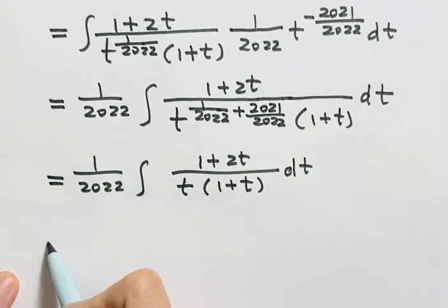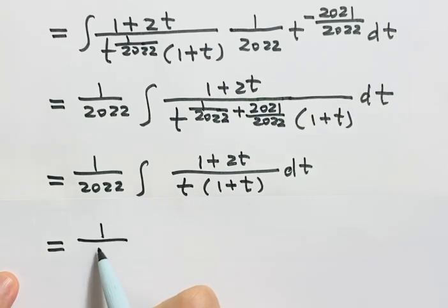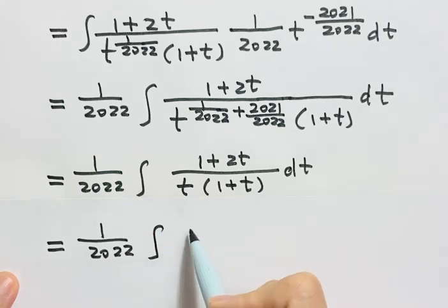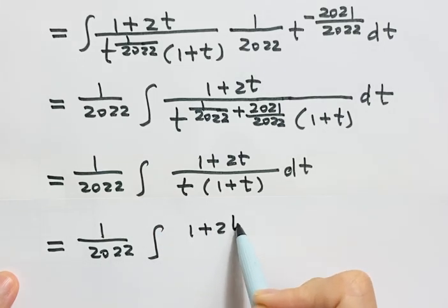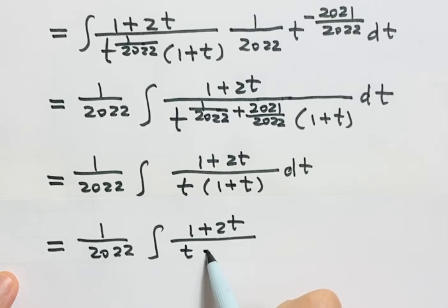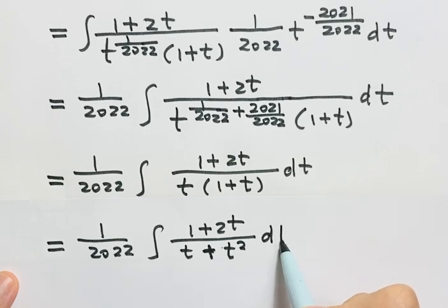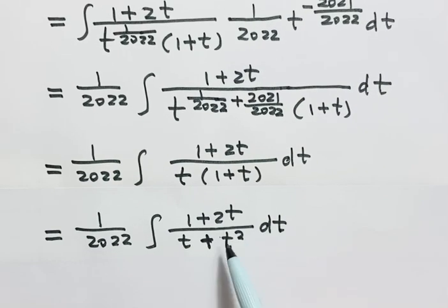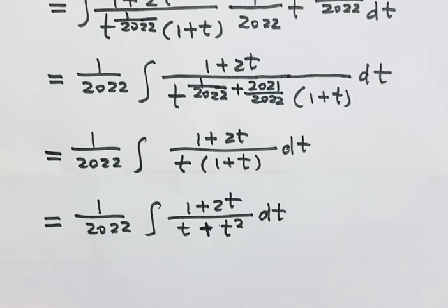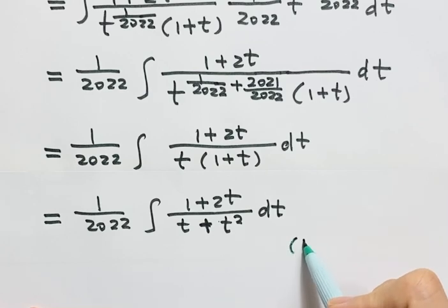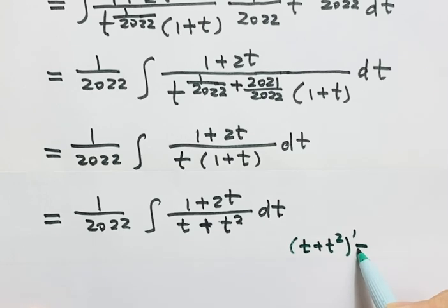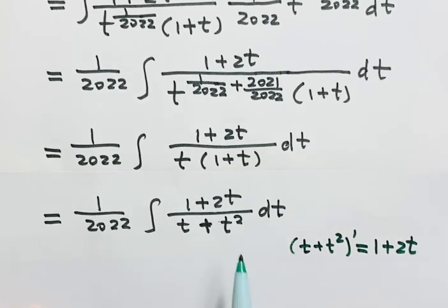Next we are going to expand the denominator. Expanding gives us t plus t squared. Now let's look at the relationship between the numerator and the denominator. Taking the derivative of the bottom — t plus t squared — gives just 1 plus 2t, which is exactly the numerator.